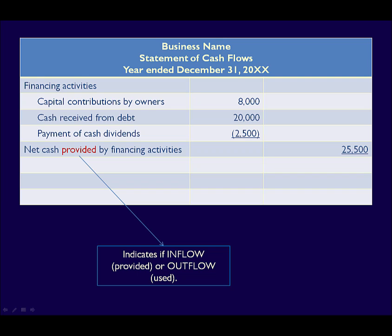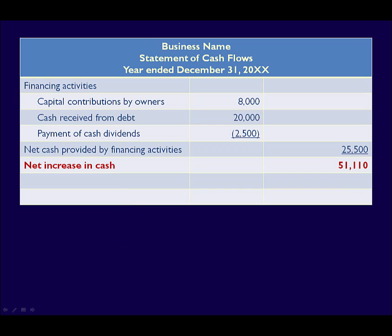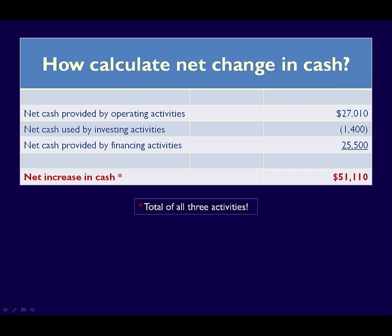We have completed the listing of inflows and outflows by activities, so next we have a net increase — or decrease — in cash. We take the subtotal of the operating, investing, and financing activities and add or subtract them, as required, to get a total, or net, change in cash. The net increase in cash of $51,110 has been determined by combining all three activity subtotals, and on the statement of cash flows the net change in cash is placed immediately under the subtotal for financing activities.